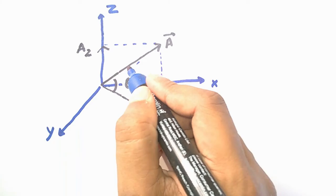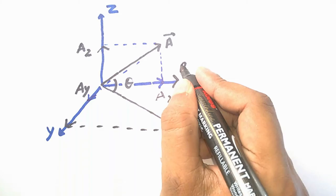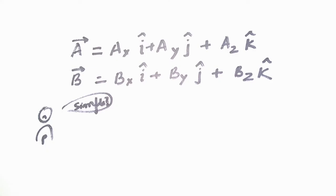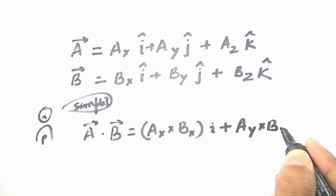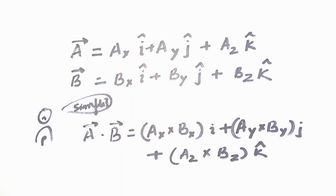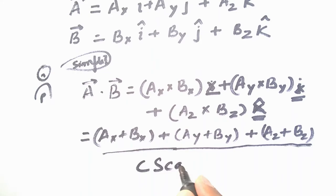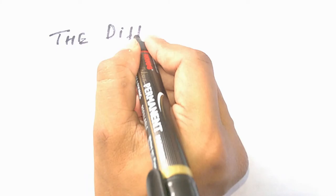Let's say we have two vectors A and B working at an angle theta between them. The components of vector A along x, y, and z directions are ax, ay, and az respectively, and the same can be said for vector B. To multiply these two vectors and get a scalar quantity, we multiply the components along x of both vectors, then along y, then along z, and add all of them — giving us a scalar quantity which is the product of these two vectors.